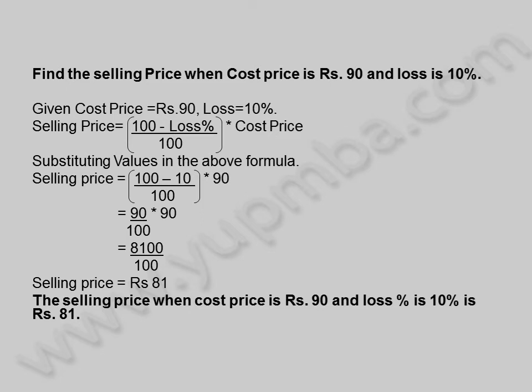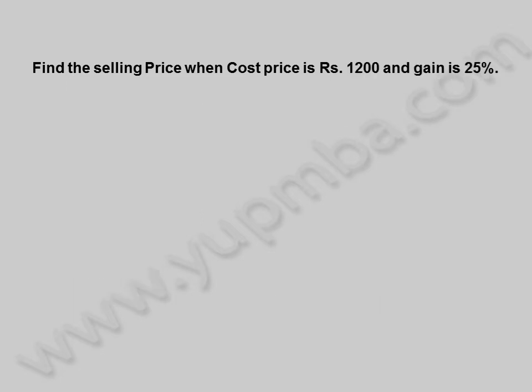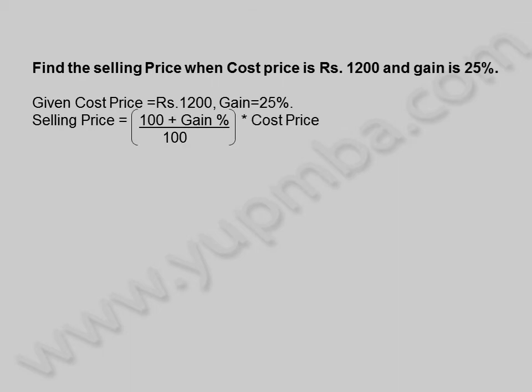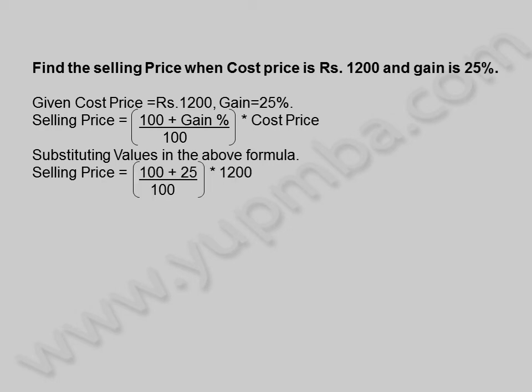Let us see another example. Find the selling price when cost price is 1,200 rupees and gain is 25 percentage. Selling price is equal to (100 plus gain percentage) divided by 100, into cost price. Substituting values in the above formula, selling price is equal to (100 plus 25) divided by 100, into 1,200.